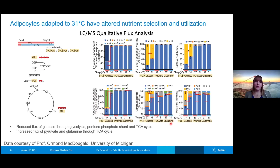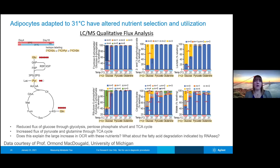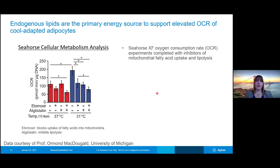If we take a look now at pyruvate and glutamine, we find a sort of reverse picture — at 31 degrees Celsius, the labels from pyruvate and glutamine are actually incorporated more in those cells at cool temperatures than at the higher temperature. But does this really explain all of the increase in oxygen consumption rate that we originally saw with the seahorse assay? So they went back to the seahorse assay and decided to look at the oxygen consumption rate in more detail.